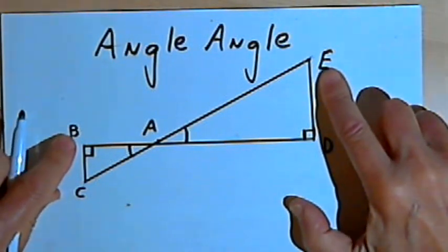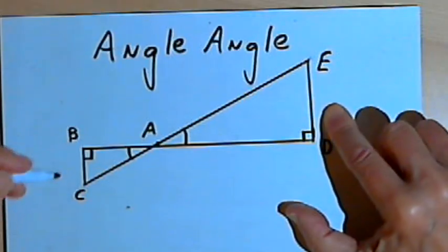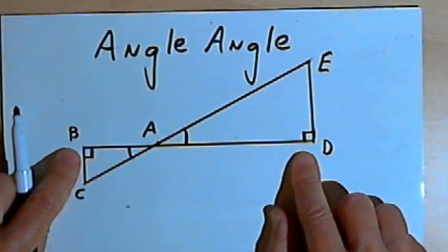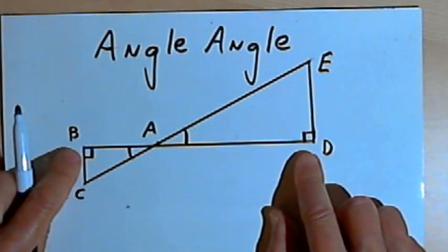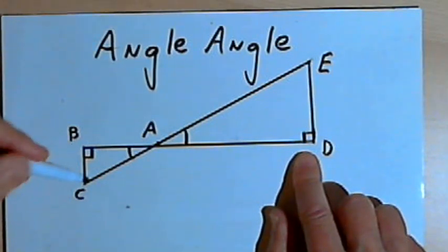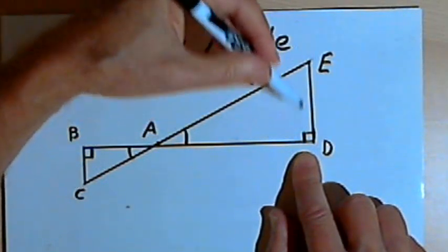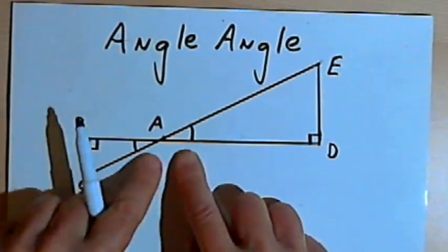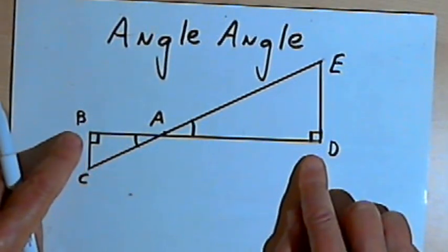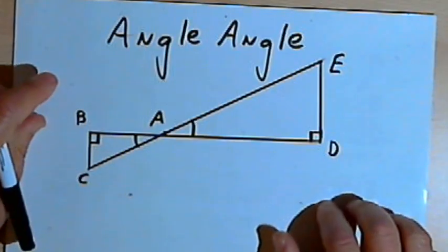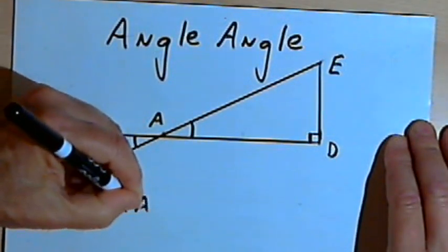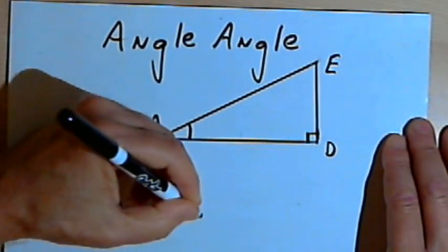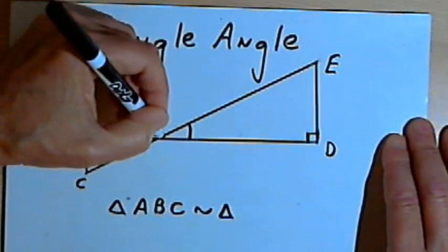These two line segments are formed into triangles by adding sides BC and DE. Looking at the two triangles, they also have corresponding right angles — angle ABC and angle ADE. So we've got two pairs of corresponding angles that are congruent: the vertical angles and the right angles. Therefore triangle ABC is similar to triangle ADE.